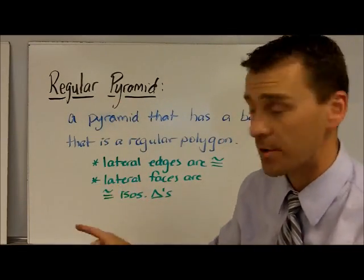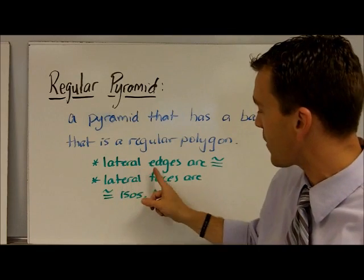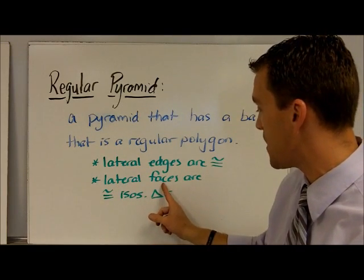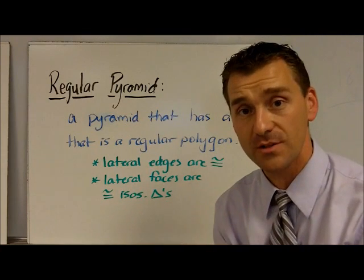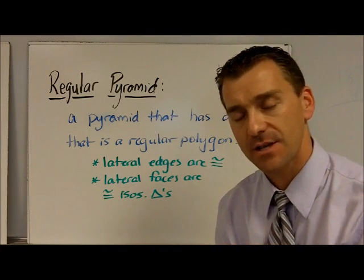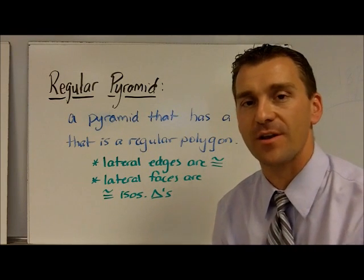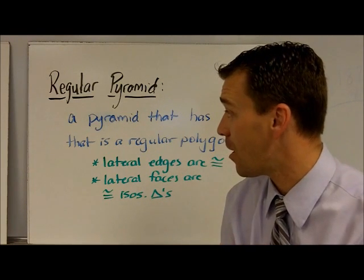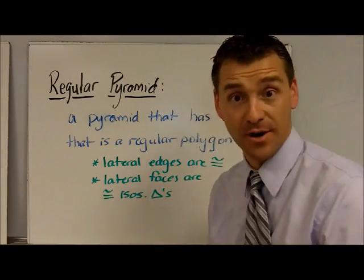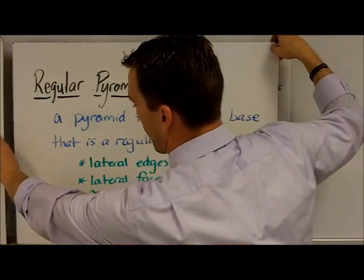A couple things that's kind of cool about the regular pyramid, number one is this. The lateral edges are all congruent. And the other thing is the lateral faces are all going to be congruent isosceles triangles. Remember that, because that might come into play on a couple examples when we find the lateral surface area and total surface area.